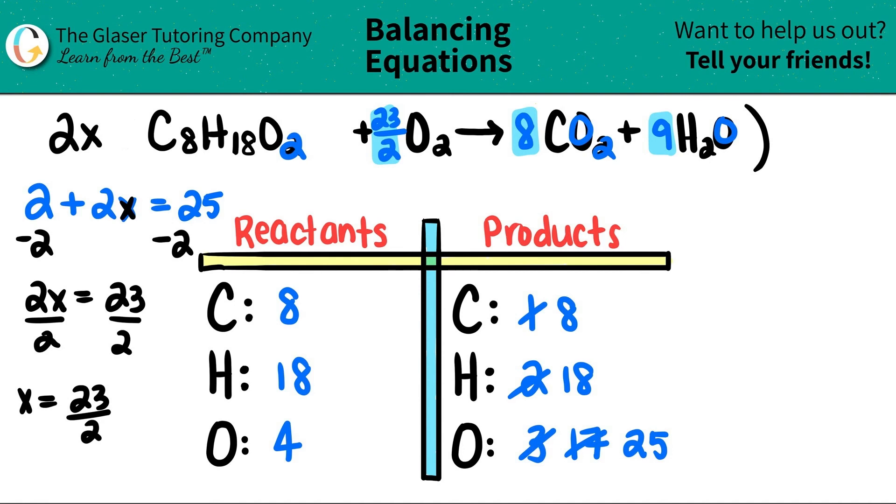Let's get to it. There was a one here, so two times one is just a two. I'm going to put a two in front of here. Two times twenty-three over two is now just twenty-three, so now I have just the whole number twenty-three. Two times eight is sixteen, so I put a sixteen there. And then two times nine is eighteen, so I get rid of the nine, put an eighteen. And now everything is balanced, and that is your final balanced equation.